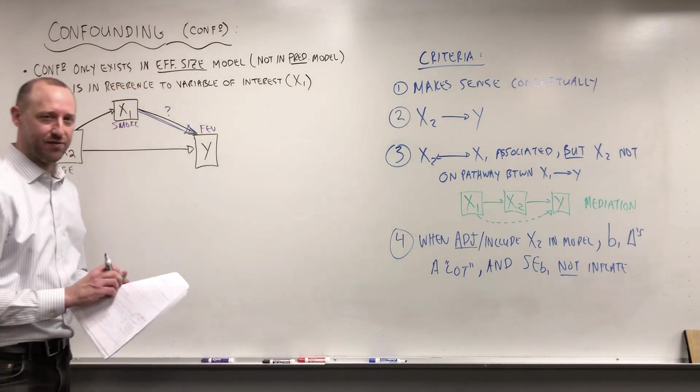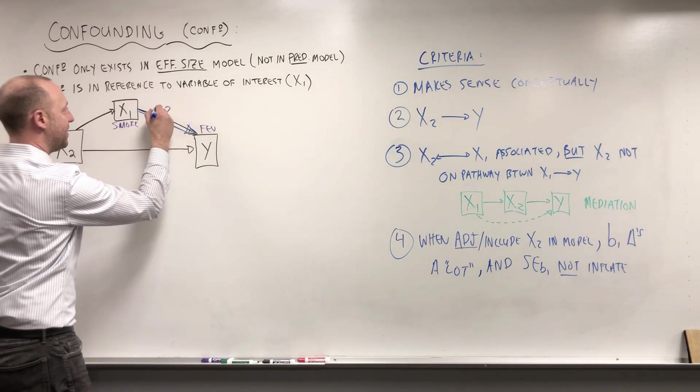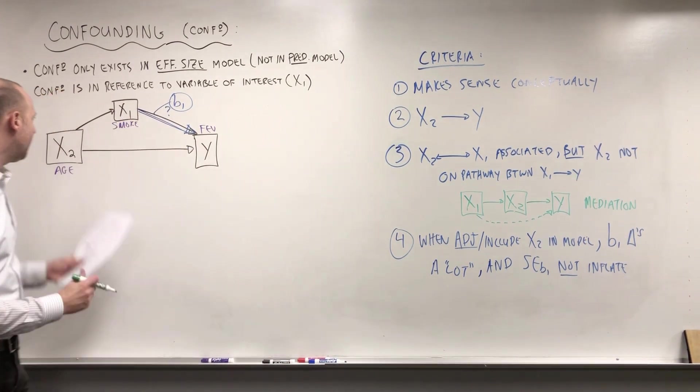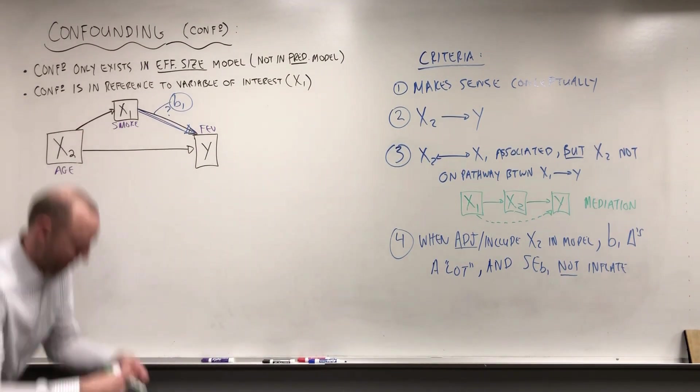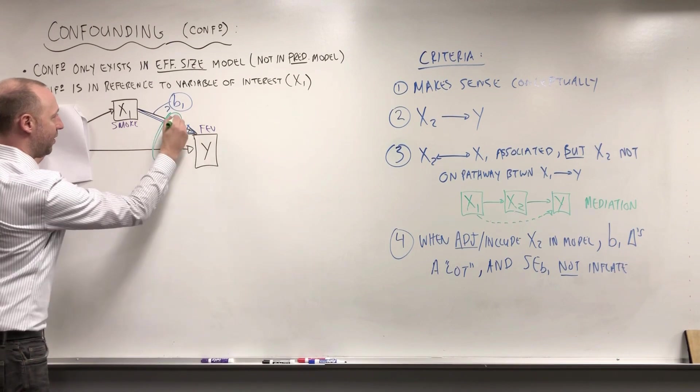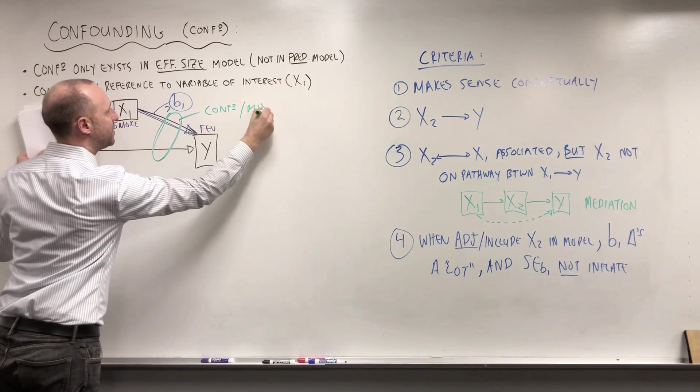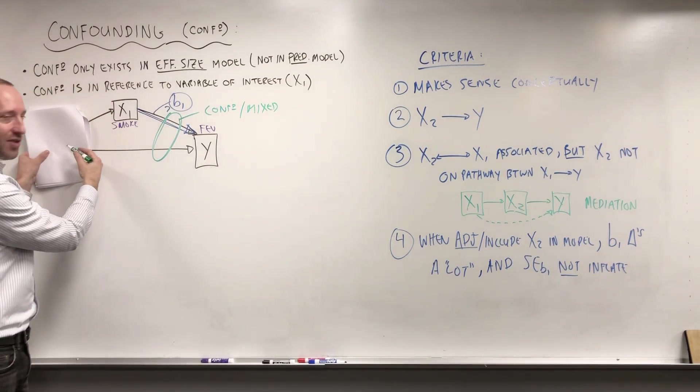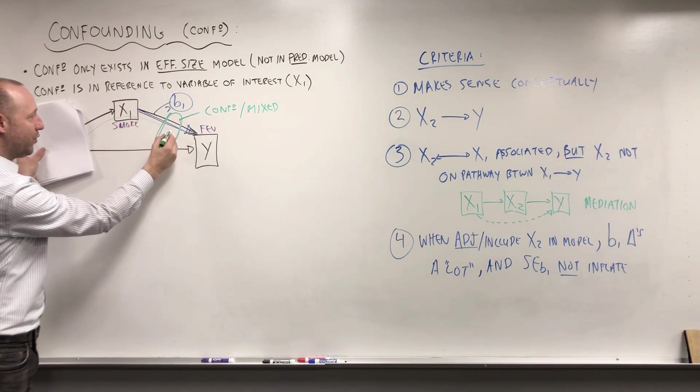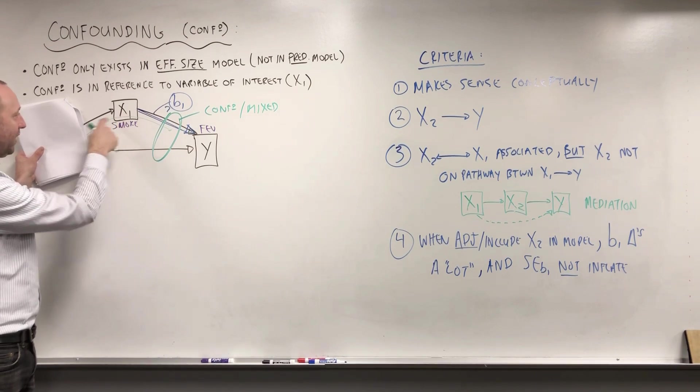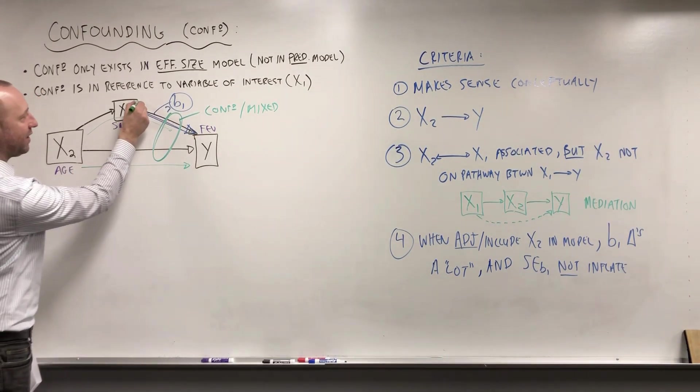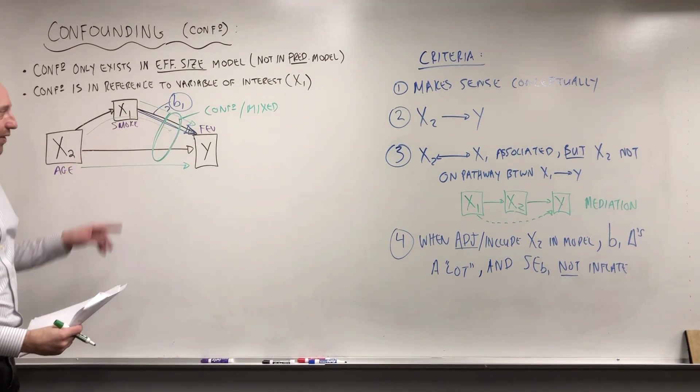So what's happening with confounding is this here is going to be captured by B1 when we fit a model. What effect does smoking have on the FEV? Now, if we do not have age or X2 in the model, what happens? These two effects are confounded, or you can think of them as being mixed together. Age is not included in the model, but what's happening is age is affecting smoking, which then in turn affects FEV. The age effect is going through here a bit. And the smoking effect is going to be a mixture of smoking and age. When we include age in the model, what happens is we now get the effect of age and the effect of smoking adjusted for age, removing the age confounding.